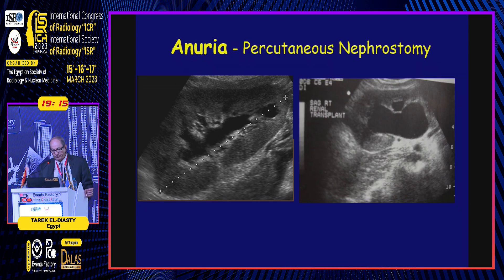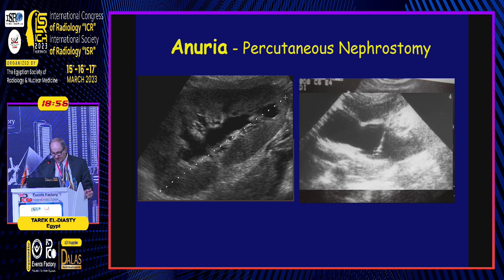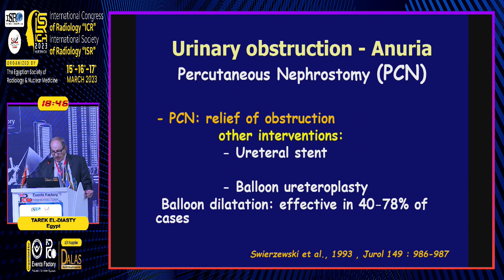For non-vascular indications, bilateral obstruction with anuria is an emergency, and we usually start with the site of better parenchymal thickness. Even the more dilatation, the more easy the process — like here with advanced hydronephrosis, we can see the needle easier than with a patient with mild obstruction. Percutaneous nephrostomy aims at relieving the obstruction and allows other interventions like ureteral stenting, antegrade stenting of the ureter, and balloon dilatation.